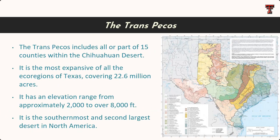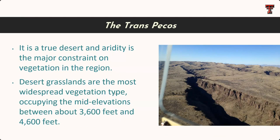The Trans-Pecos region includes all or part of 15 counties in the Chihuahuan Desert. It's the most expansive of all the ecoregions of Texas, covering 22 million acres with an elevational range from 2,000 to over 8,000 feet. It is the southernmost and second largest desert in North America. It is a true desert — aridity is a major constraint on vegetation growth, and water is a limited resource. Desert grasslands are the most widespread vegetation type across most of the landscape.